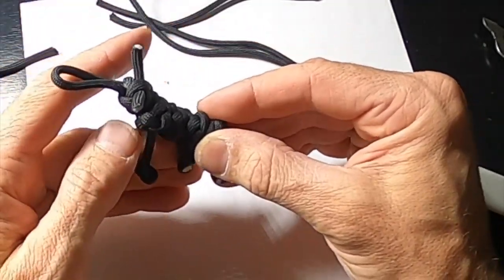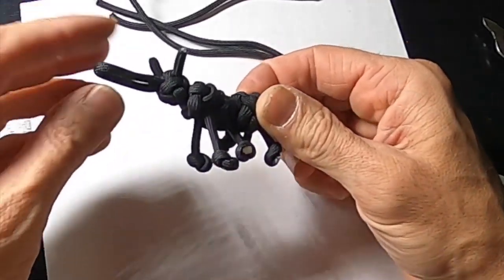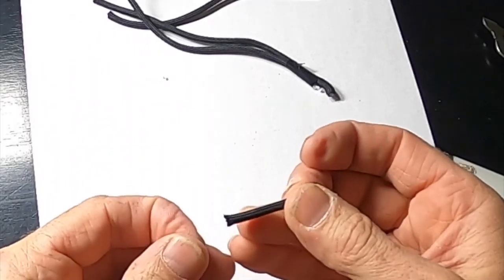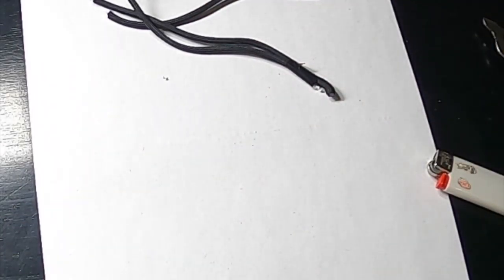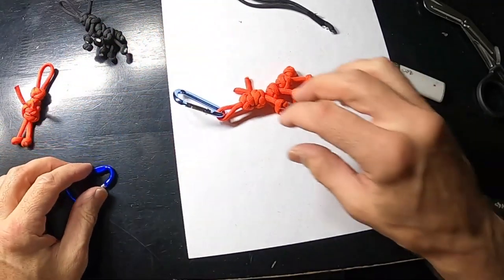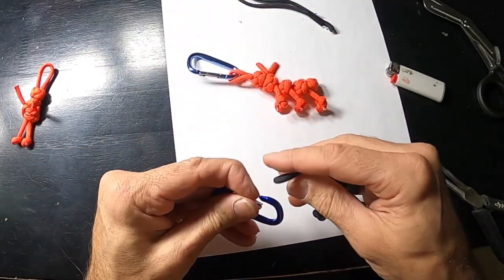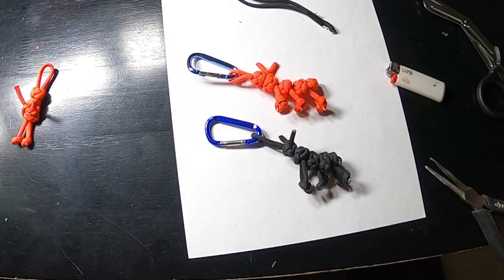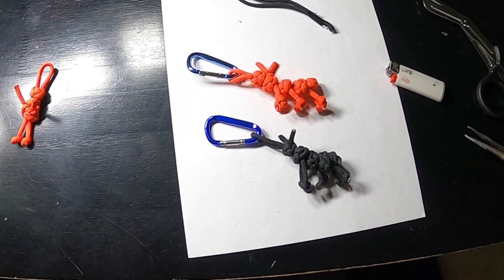It could be an ant, an aardvark, or an anteater. So that is how you make an ant out of paracord. And there's your keychain.